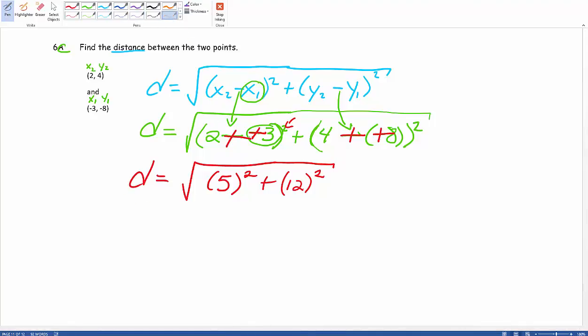Next, we're going to go ahead and square both items. So we end up with our distance is equal to the square root of 5 squared is 25, plus our 12 squared gives us 144.